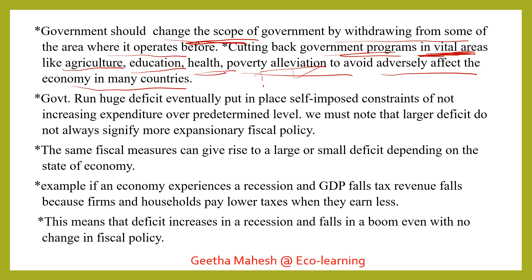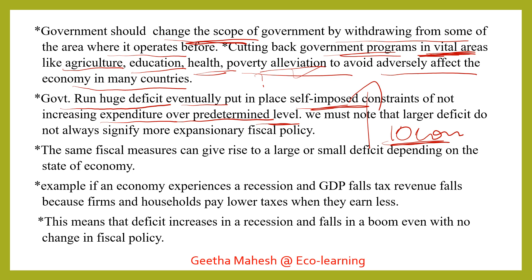This is the inefficient management loophole. We will reduce the government expenditure. The government runs a huge deficit. For example, the government will fix a predetermined amount of 10 crores for a program. If it is more than 10 crores, the expenditure should not cross that predetermined level.